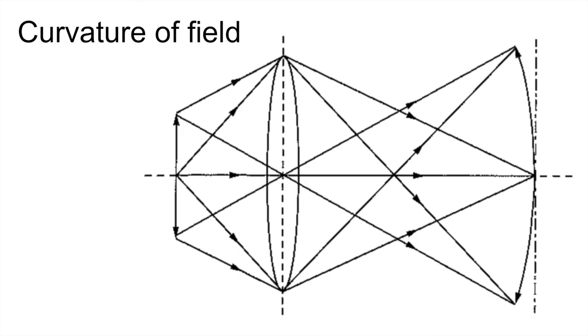So some of the ways that we can deal with these aberrations. Obviously, if we want to maintain a high resolution and depth of field, then we would want to either compensate for or reduce these aberrations. So how we do this is, first of all, one of the techniques is that we can combine lenses that have different shapes and refractive index.